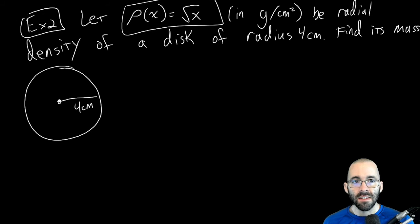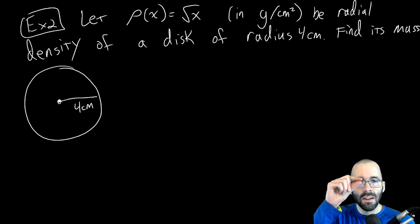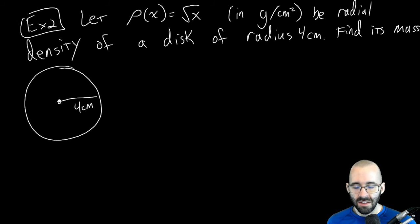The density depends on how far out from the center we are. At the middle of the disk, the density is basically zero grams per centimeter squared. So the material becomes infinitely thin or infinitely light, or maybe it's just a tiny little hole poked in the middle.